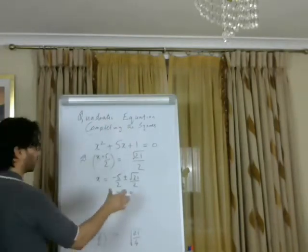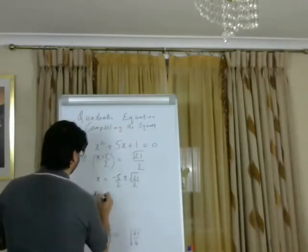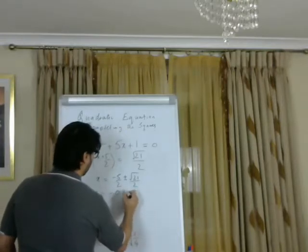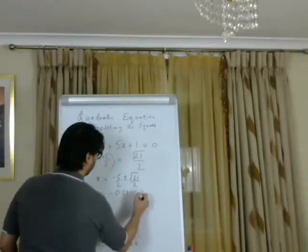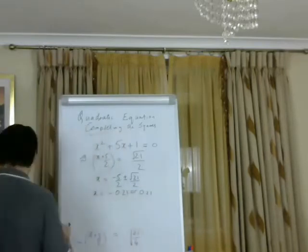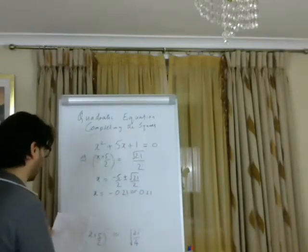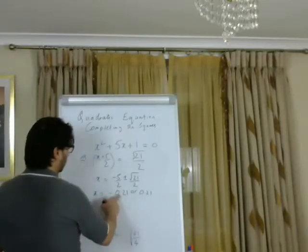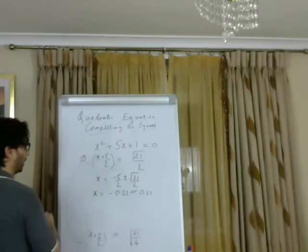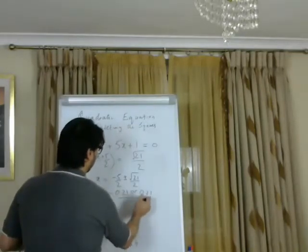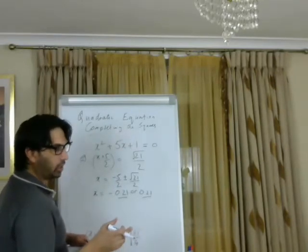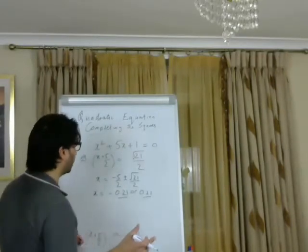We'll have two equal roots in this case. x equals minus 0.21 or plus 0.21. Because we have minus 0.21 and plus 0.21, these are the two roots of the equation.